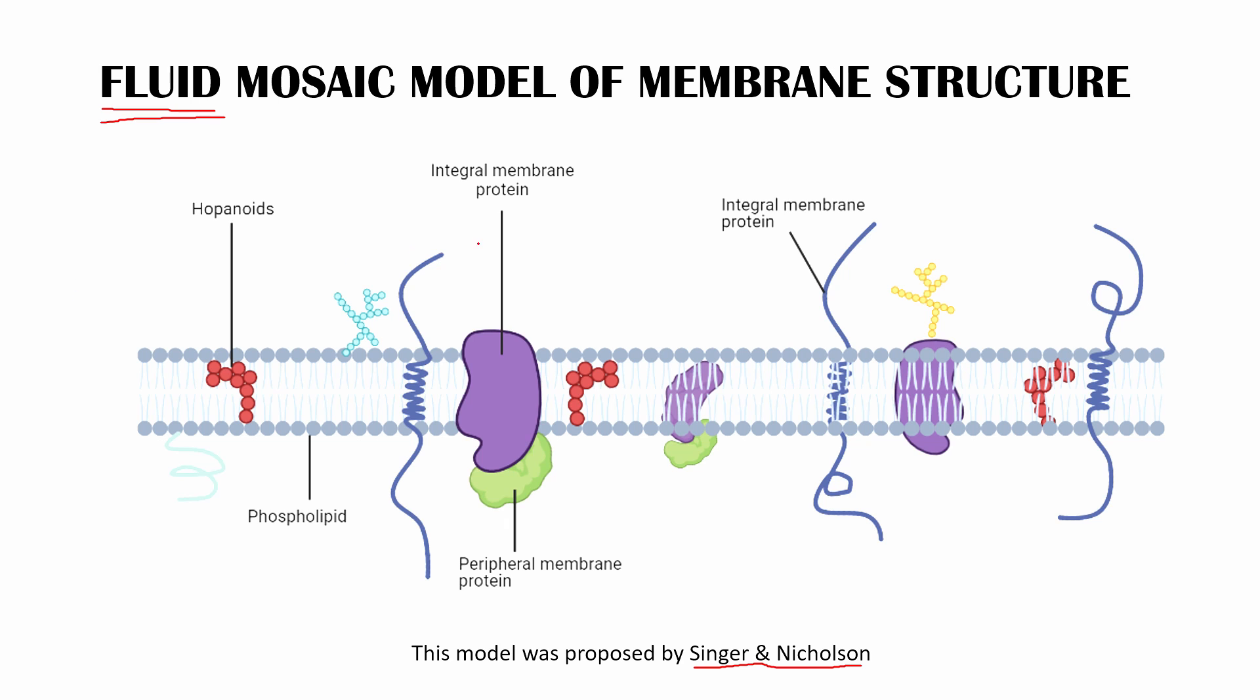Because all the components you see here - here's a hopanoid, here's a glycolipid, here's an integral membrane protein, here's another integral membrane protein, here's a peripheral membrane protein, here's a glycoprotein, this one's a hopanoid, this one again an integral membrane protein. So all these various types of components you see, they are not in the same place, they are constantly moving.